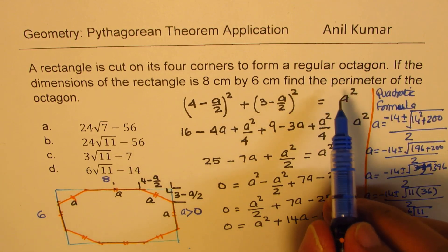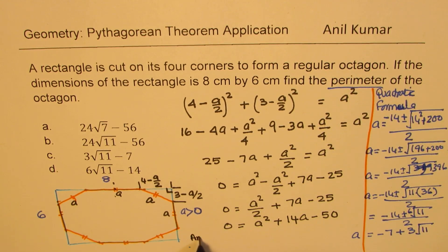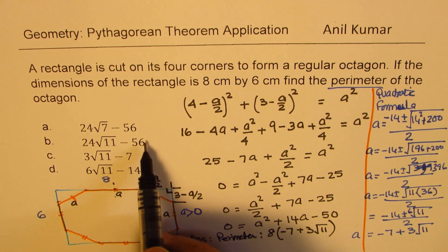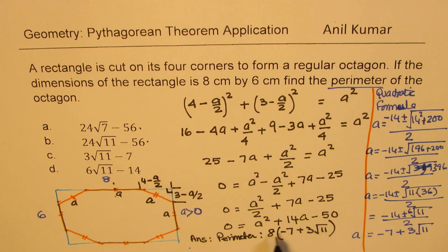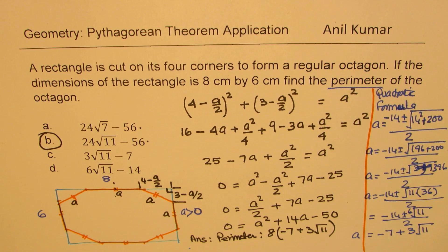We need the perimeter. So we can now write down the perimeter. So our answer will be, perimeter will be 8 times minus 7 plus 3 square root of 11. So that is minus 56 plus 24 square root of 11. We have 56 in these two. Square root of 11, 8 times 3 is 24. So we get option B as the right option.